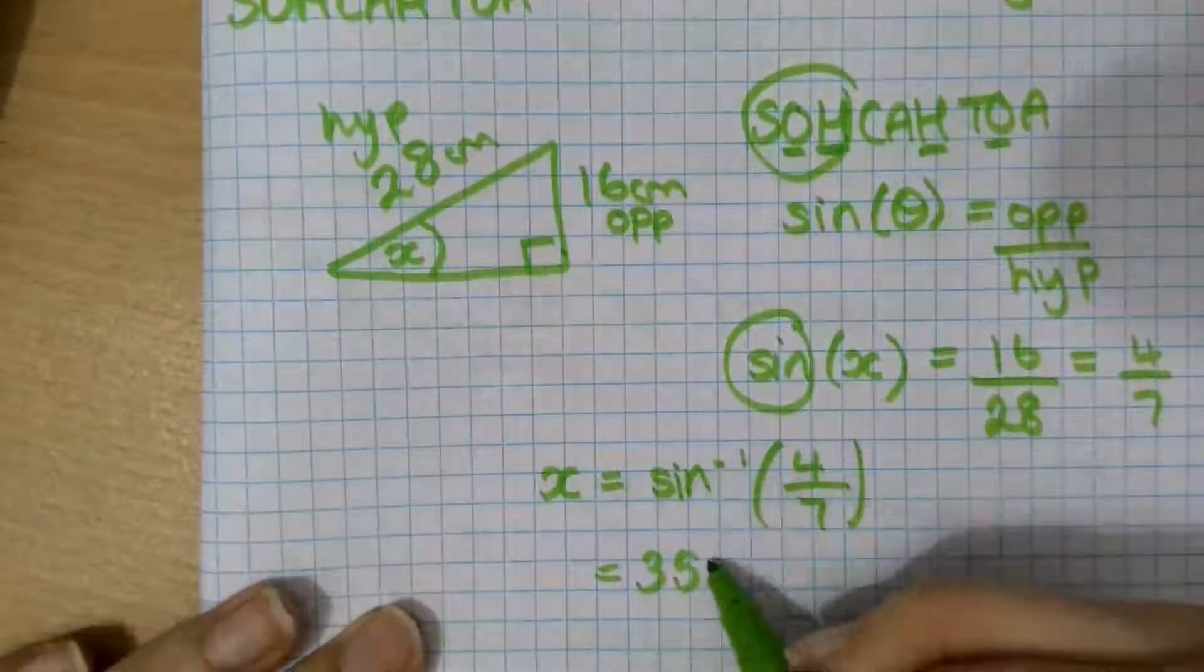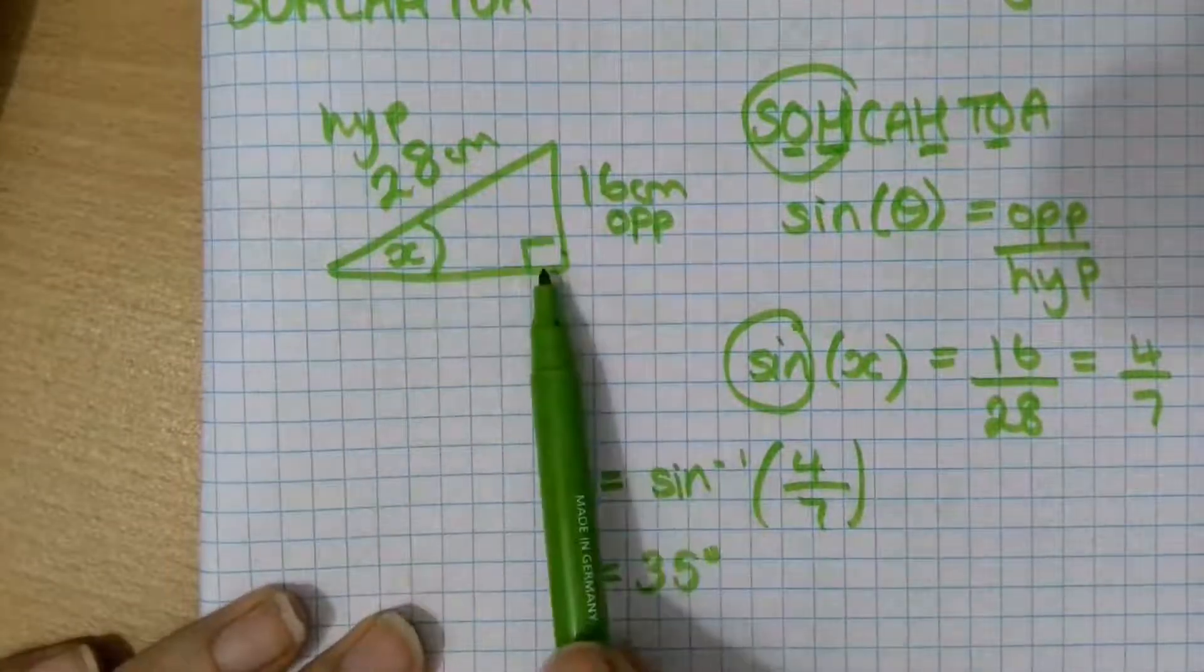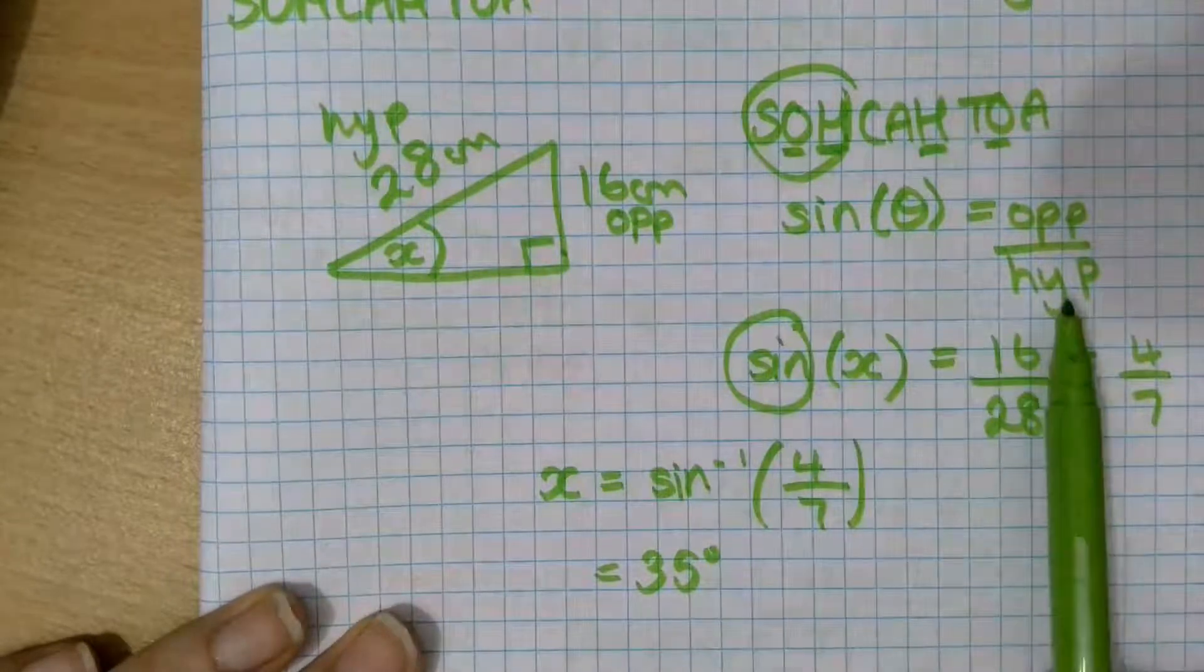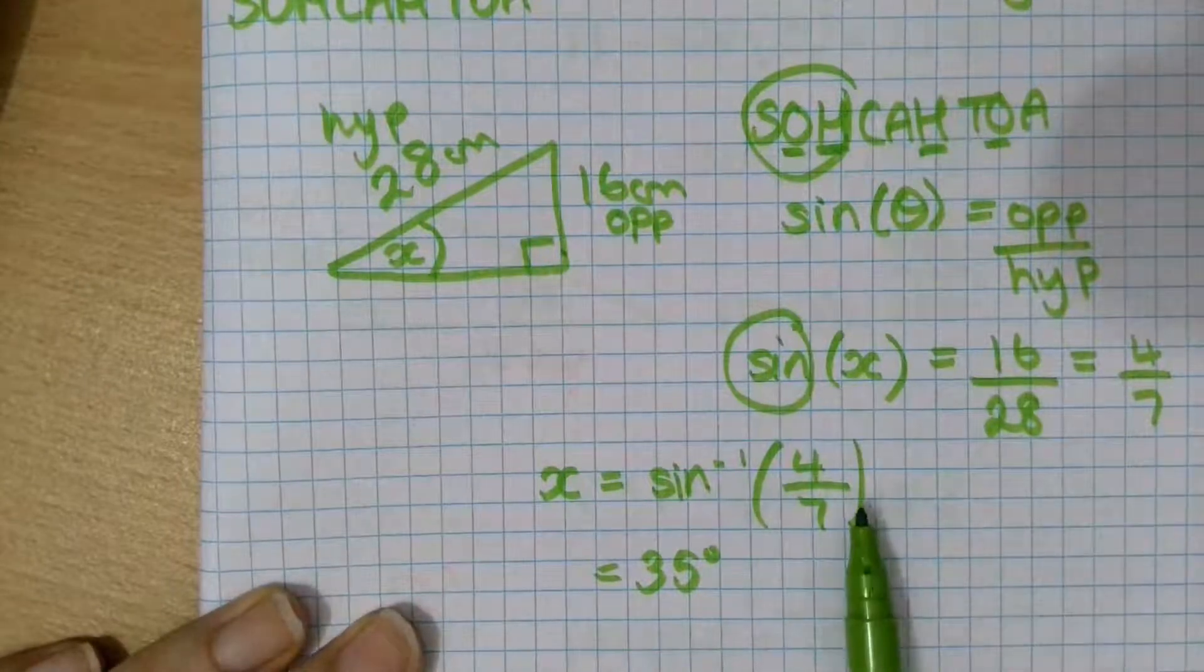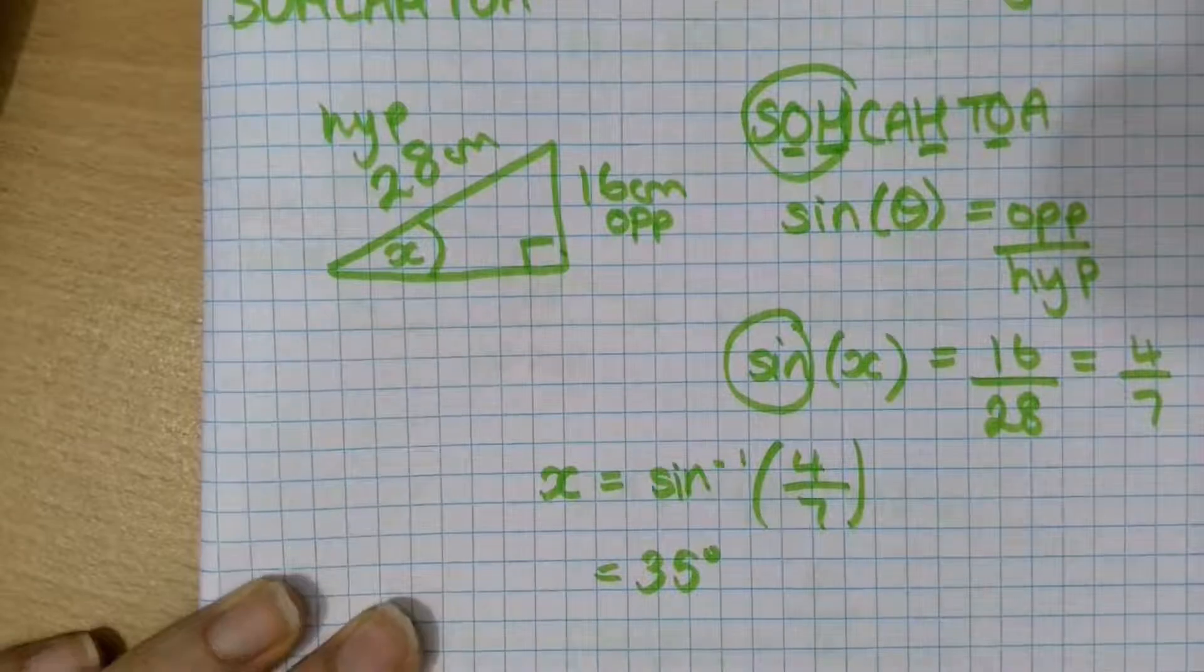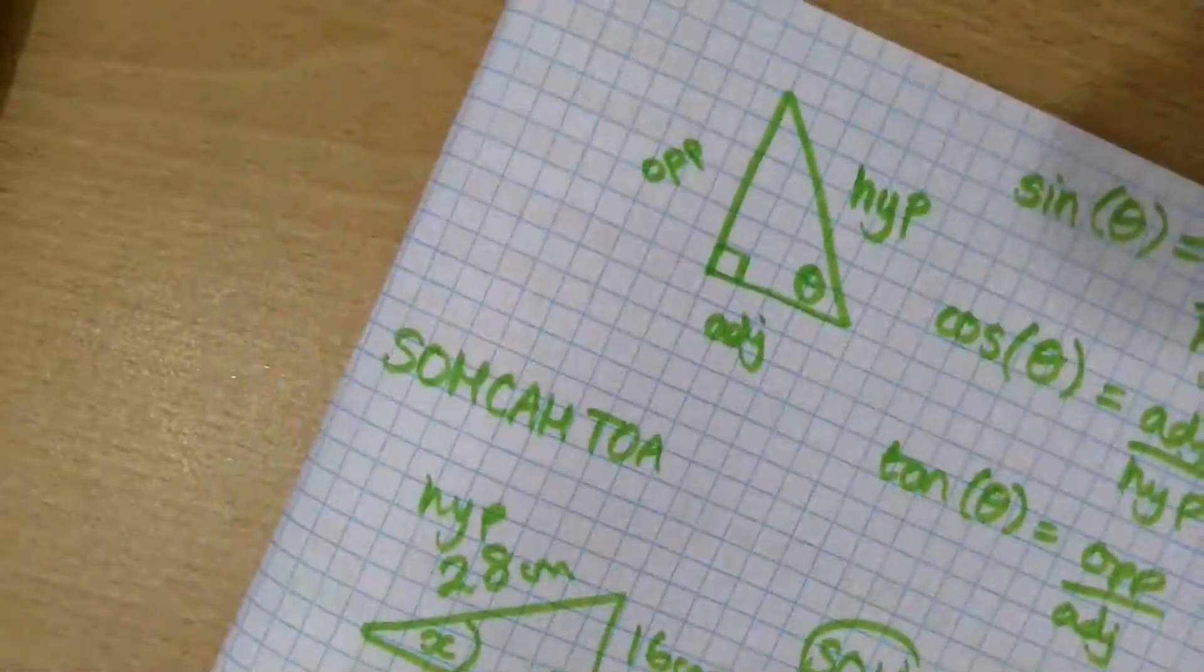So let's quickly remind ourselves of the steps. I labeled my triangle. I chose my formula. I put my numbers in. I rearranged. And I used my calculator. Let's have a look at another example.